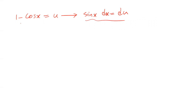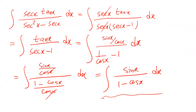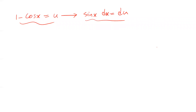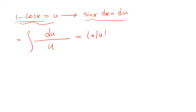So all you need to do is to substitute these two expressions into the previous integral. Therefore that integral will be equal to: instead of sine x dx, simply write du, and instead of 1 minus cosine x, write u. So that integral will be equal to the integral of du divided by u, which is equal to ln u plus c, the constant of integration.